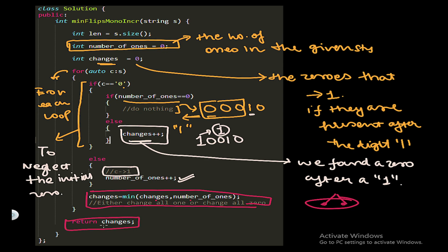This is the simple code required for this question. It can also be done with dynamic programming, but since the constraints are small — only up to 10^5 — we can solve it with a single O(n) traversal. I hope you understood the question and the code. If you have any doubts, comment them out and we'll meet in the next video. Bye!